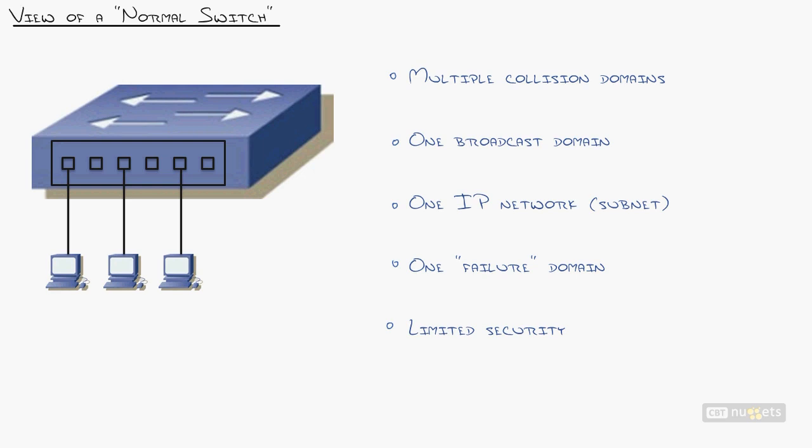Before we can get into how VLANs work, we need to have a base understanding of how normal switching works. Normal switching is a major improvement from the hub days. A hub being a device where everybody sees everybody. A normal switch offers some separation because it has multiple collision domains.